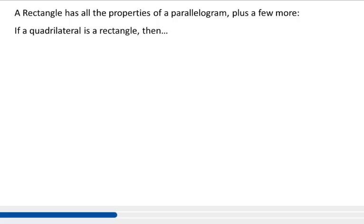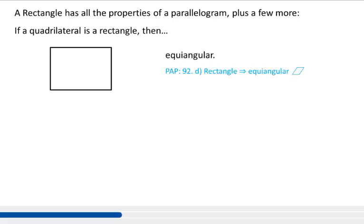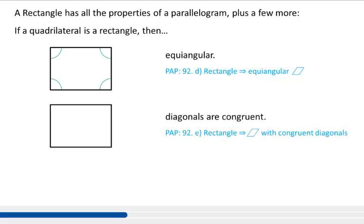Now let's look at a rectangle. A rectangle has all the properties of a parallelogram, plus a few more. If a quadrilateral is a rectangle, then it is equiangular — all four angles inside the rectangle are congruent to one another. Next, if a quadrilateral is a rectangle, then the diagonals are congruent to one another. I'm going to draw in my diagonals in green, making them the same color in my picture to show they're congruent.